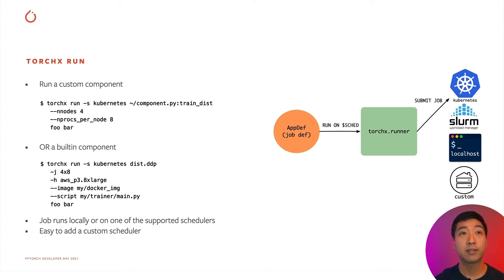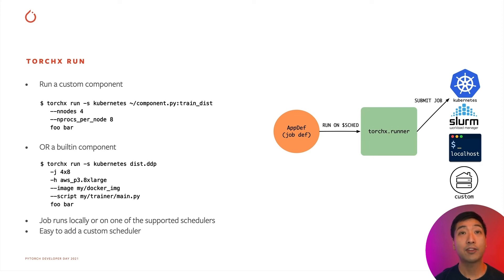Distdp is more generic since it takes the image and script as parameters, whereas train_dist is less flexible but simpler. The -s kubernetes option tells TorchX that the components are to be submitted as a job onto a Kubernetes cluster. To run the component on a different scheduler, all you need to do is pass a different -s option. For example, to launch on Slurm, you would pass -s slurm instead of -s kubernetes. In addition to the CLI, there's also a programmatic API to the TorchX runner so that you can build custom programs that launch components.